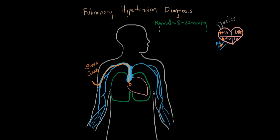For pulmonary hypertension, we technically define it as a value that's above 25 millimeters of mercury. But this varies widely according to people — it can change based on altitude, based on your height, and a lot of different factors. In general, the higher the pressure, the more hypertensive we are.